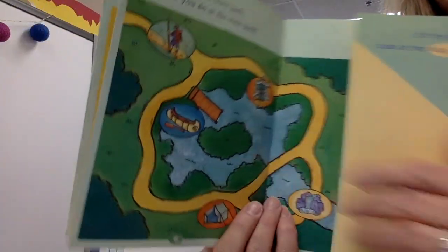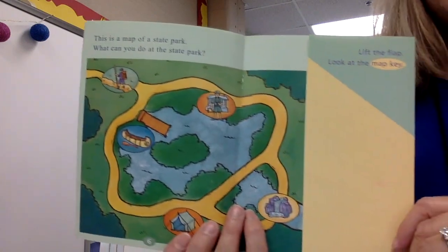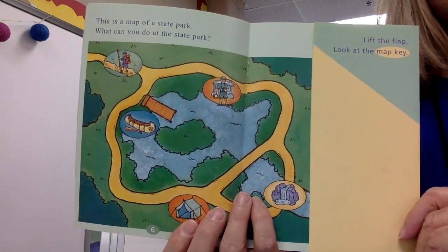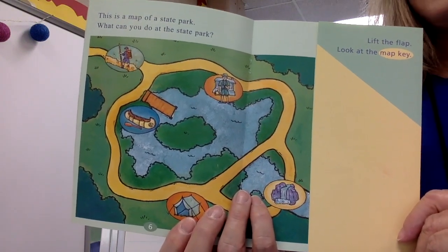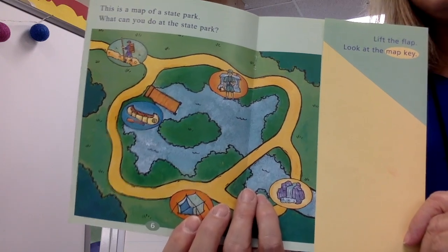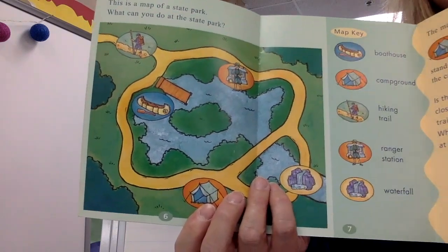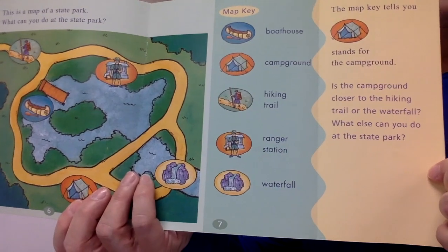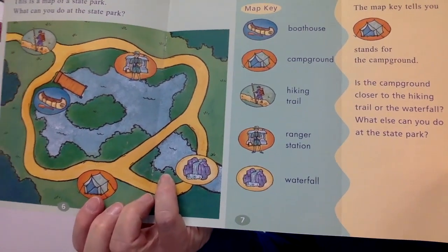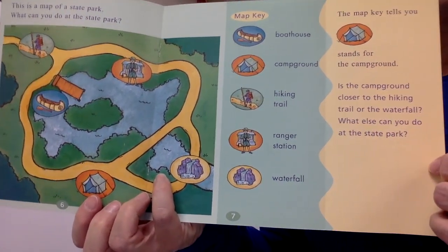This is a map of a state park. What can you do at the state park? Lift the flap. Look at the map key. Oh, look at the different things. There's a boathouse, campground, hiking trail, ranger station, waterfall. The map key tells you the tent stands for the campground.